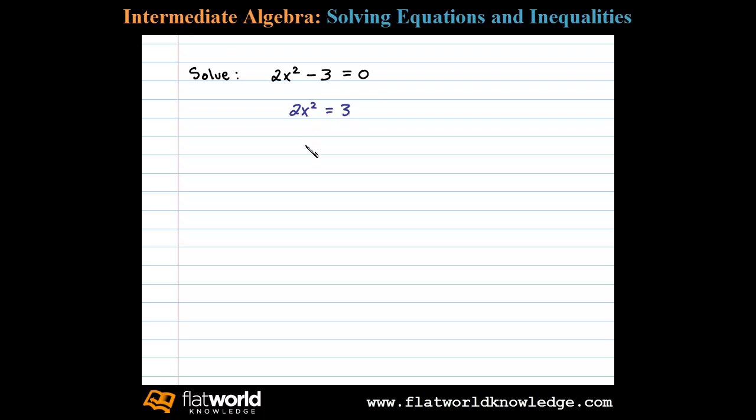And then dividing both sides by 2, we have x squared equals 3 halves. Now at this point we'll apply the square root property. In that case we're left with x equals plus or minus the square root of 3 halves.